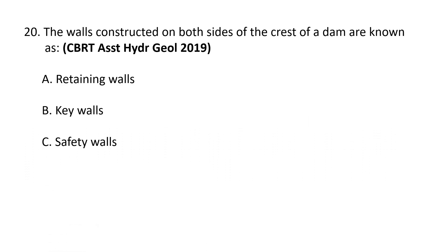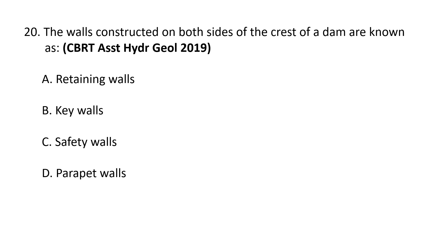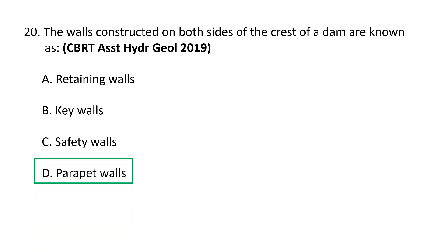Next question: the walls constructed on both sides of the crest of a dam are known as — A) Retaining walls, B) Key walls, C) Safety walls, and D) Parapet walls. The walls constructed on both sides of the crest of a dam are known as parapet walls. These are low protective walls on either side of the roadway or walkway on the crest of a dam. D is the correct option.